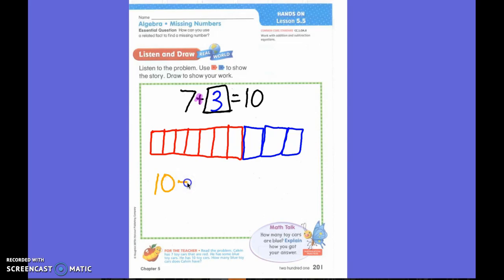So I could have done 10 minus what? Three. No, I didn't know what that means. Seven. Ten minus seven equals three.